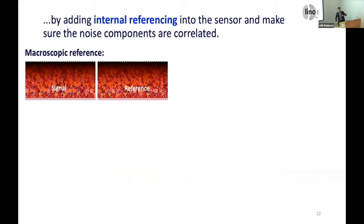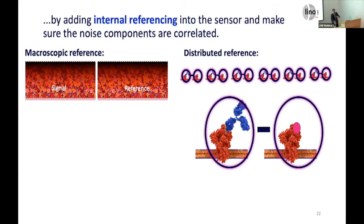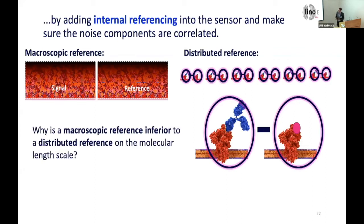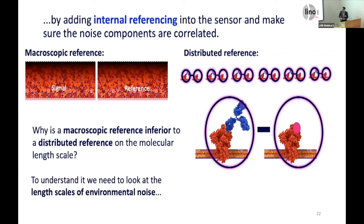The second point is extremely important because many of you might think you just put a reference spot next to your sensing surface. But that's not how it works. There's a huge difference between doing referencing like that versus doing a distributed referencing within your sensor spot. Ideally, you want your specific interaction volume, a volume with a mutated binding site, subtract the two, and repeat this over the entire sensor. That would be the ideal robust biosensor.